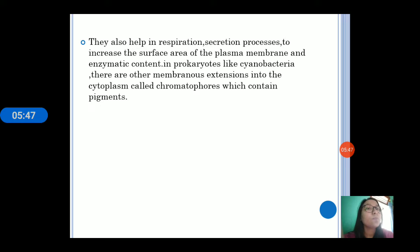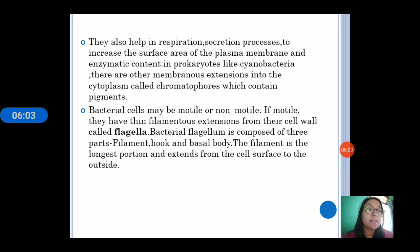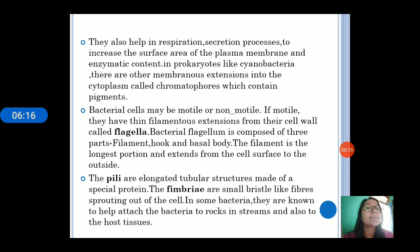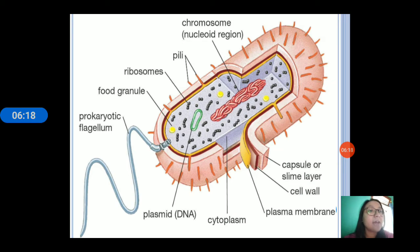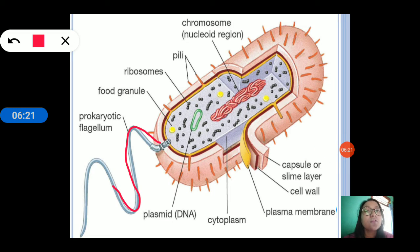In prokaryotes like cyanobacteria, there are other membranous extensions called chromatophores, which contain pigments and help in imparting different colors. Bacterial cells are of two types: motile and non-motile. Motile means they can move and non-motile means they cannot. If a bacterium is motile, it has flagella.